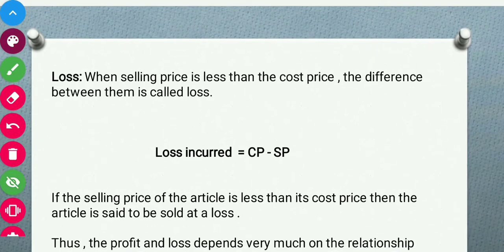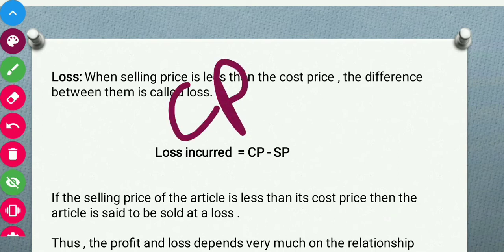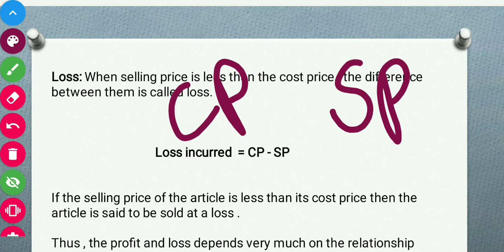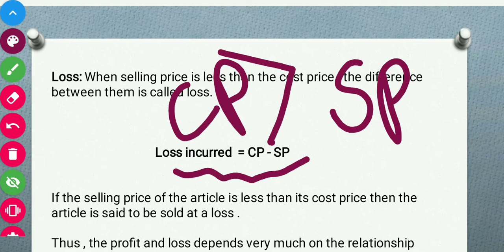Now we have loss. Again we have two terms: cost price and selling price. Whenever the shopkeeper is purchasing the item from a retailer or wholesaler, he usually sells to the customer at a higher price, but sometimes problems arise — there is a lot of stock — so he sells at a lower price compared to the cost price. In this case he incurs a loss, because the cost price is more and the selling price is less. When the selling price is less than the cost price, the difference is called loss: Loss = CP − SP, where CP is greater.